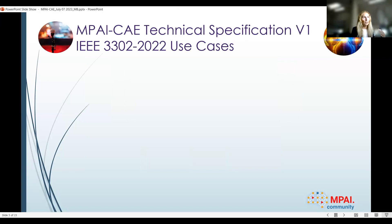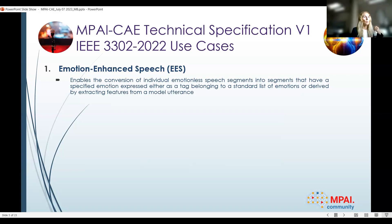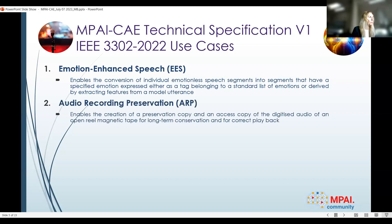Based on this, MPAI created a number of applications; CHI is one of them. We have specifically four use cases. We start with emotion-enhanced speech. The idea is that nowadays a lot of conversation comes through avatars or non-live persons. To make conversation more appealing, we create emotions to add to emotionless speech — either by selecting from a list of emotions, or by deriving the desired emotion from a model utterance and extracting its features.